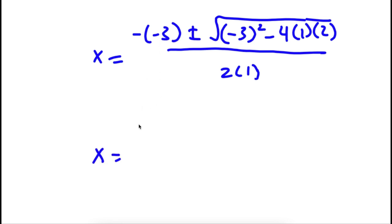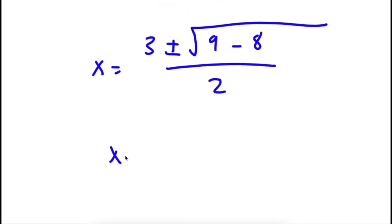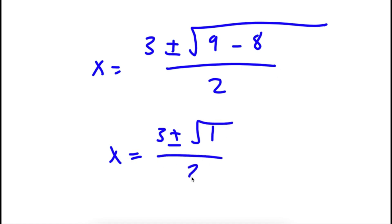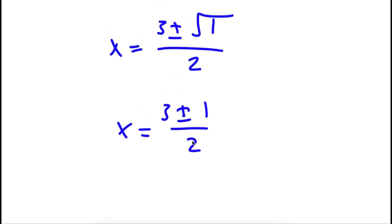Now to simplify: negative of negative is positive, so negative negative 3 is positive 3, plus or minus the square root of — negative 3 squared, negative times negative is positive, so that's 9 — minus 4 times 1 times 2, which is 8. All over 2 times 1, which is 2. So I have x is equal to 3 plus or minus the square root of 1 — because 9 minus 8 is 1 — over 2. So x is equal to 3 plus or minus 1 over 2, because the square root of 1 is 1.